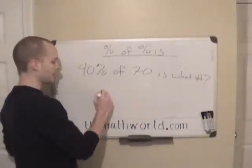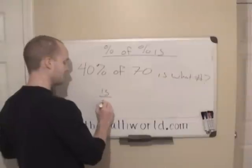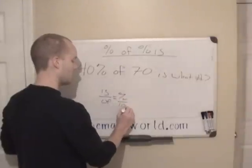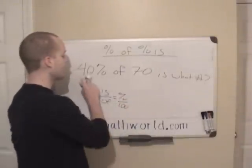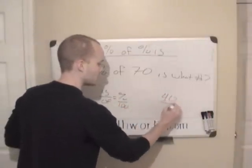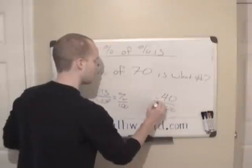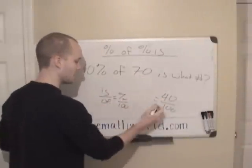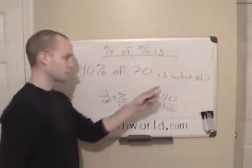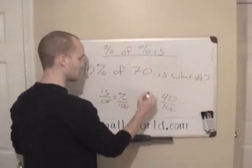And so again, we're going to write it out again: is over of equals percent over 100. And let's go ahead and fill in what we already have. 40%, so we're given our 40%. So we have 40 over 100 of 70. So we have the of is 70. Is what number? So we're trying to find what is is equal to.